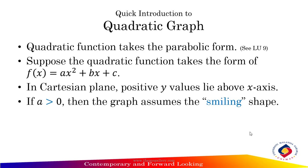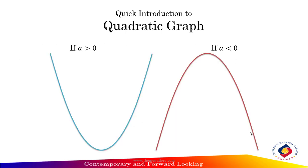If a > 0, the shape of your graph is a smiling face. And if a < 0, the shape of your graph is a sad face.